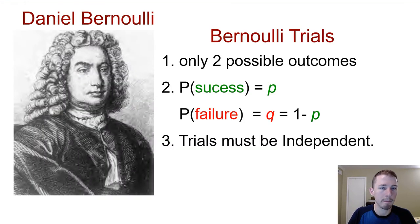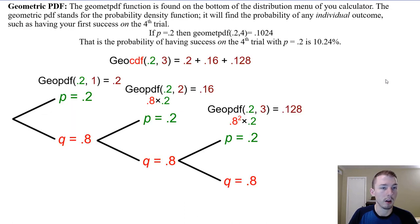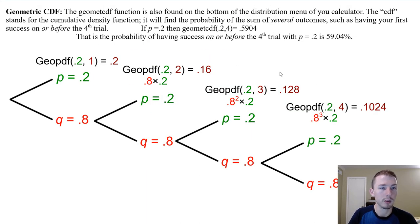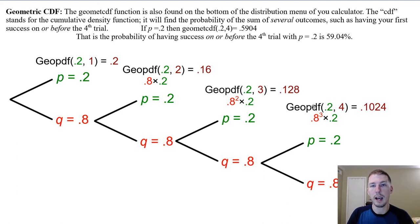We'll also be talking about our cards again. For Bernoulli trials — in order for it to be geometric or a binomial distribution — we have to have only two possible outcomes: success or failure, and the trials must remain independent. Our geometric PDF basically says what's the probability that our first success was on the first, second, or third trial. They're always skewed to the right because the most likely outcome is always the first one. The cumulative density function gives the probability of success on or before a specific trial, adding all the individual PDFs together automatically.